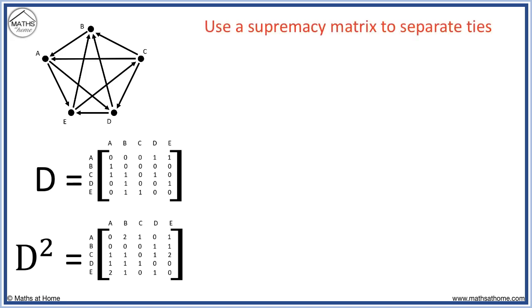We use a supremacy matrix to separate any tied players. A common supremacy matrix equation is S equals D plus a half D squared. We put a half value before the D squared matrix because second order influences are not as important as the actual victories shown in the D matrix.